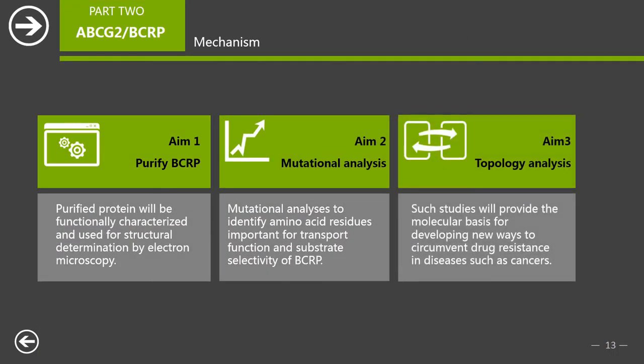At present, the molecular mechanism by which BCRP acts to transport drugs is still unknown. Thus, the long-term goal of the research is to explore the molecular mechanism of BCRP. To this end, we propose a major specific aim: structure and function analysis of BCRP. Site-directed mutagenesis and functional characterization of BCRP mutants, protein purification, and structure determination will be employed.